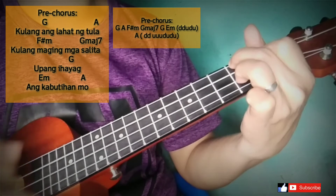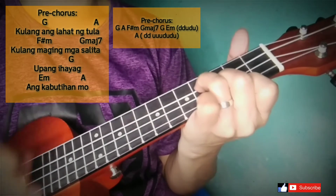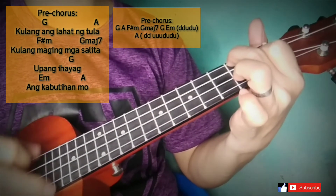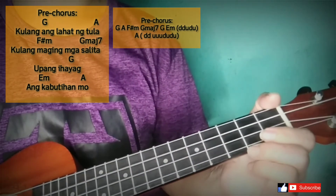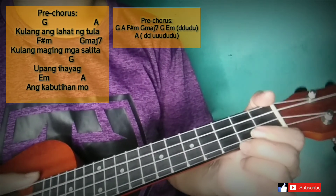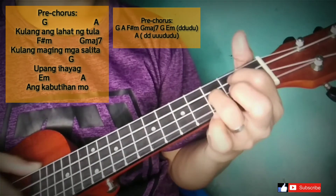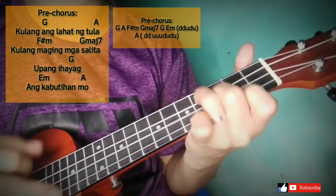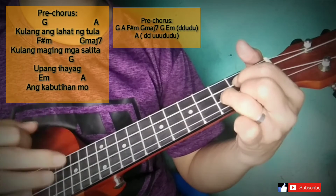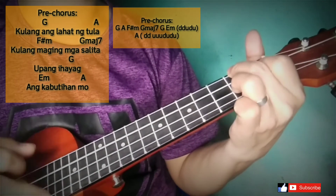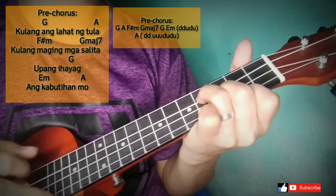Kulang ang lahat ng... kulang ang lahat ng tula — F sharp minor — maging salita — G major 7 — upang — G — ang kabutihan mo. I'll play the pre-chorus starting from the last part of verse 1: Di kaya ang ilarawan ng kagalingan mo, kulang ang lahat ng tula, kulang maging mga salita upang ihayag ang kabutihan mo.